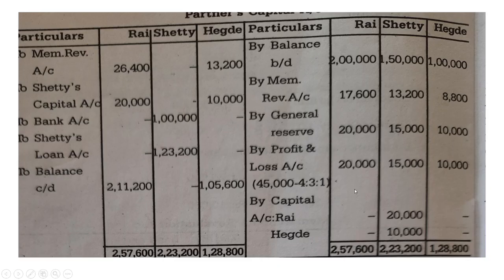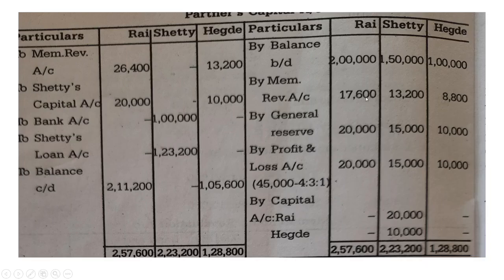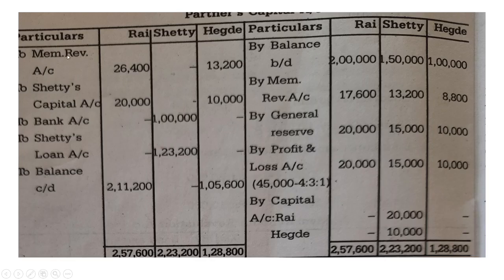Moving on to the partners' capital accounts. Balance brought down: Rai Rs. 2,10,000, Egde Rs. 1,50,000. From the memorandum revaluation account — the first revaluation profit is a debit side entry: Rai Rs. 17,600, Shetty Rs. 13,200, Egde Rs. 8,800. The second memorandum revaluation gives a credit balance entry for Rai Rs. 26,400 and Egde Rs. 13,200.